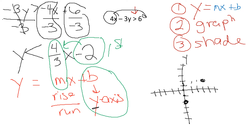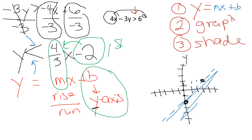Normally, if I was graphing a line, I would draw a line to connect those dots. But because this is an inequality — because it's not technically equal to — I am going to use a dotted line, not a solid line. If it was less than or equal to, I would use a solid line. But because it's not equal to, I use a dotted line. This is telling me that Y is less than this line, so I'm going to shade in the bottom.